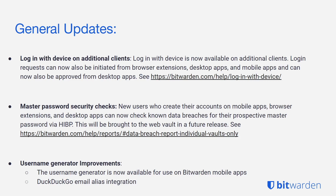We've implemented new master password security checks. New users who create their account on mobile applications, browser extensions, or desktop applications can now check for known data breaches for their prospective master password via HaveIBeenPwned. HaveIBeenPwned checks the first five hashes of a given password against known data breaches, and this functionality will be brought to the Web Vault in a future release.